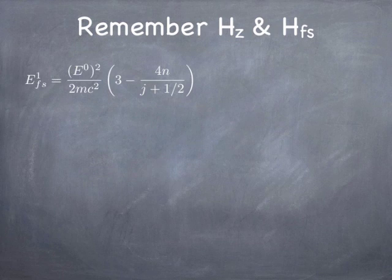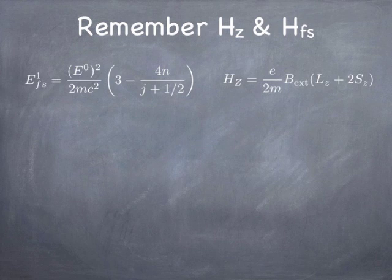The Zeeman Hamiltonian is more complicated — it's proportional to L_Z plus 2 times S_Z. The factor of 2 on S_Z comes from the fact that the spin angular momentum is related to the magnetic moment of the electron differently than orbital angular momentum is related to the orbital magnetic moment. The electron's magnetic moment is twice what you would expect from a classical spinning ball of charge, which is a purely relativistic effect.